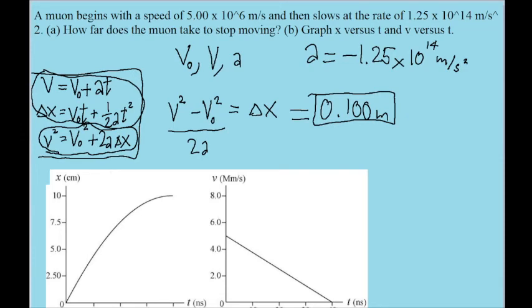For graphing x versus t, we'll use the second equation, since the second equation is written as a function of t to give us x. And then for graphing v versus t, we'll use the first equation, since that's the equation that tells us velocity in terms of time.